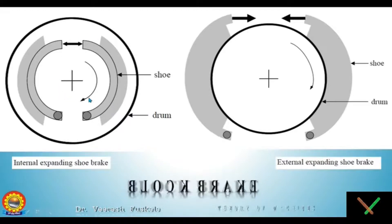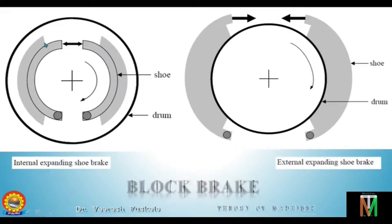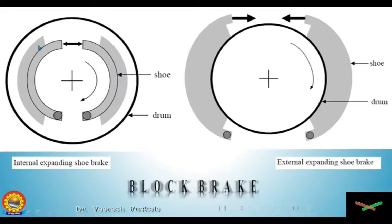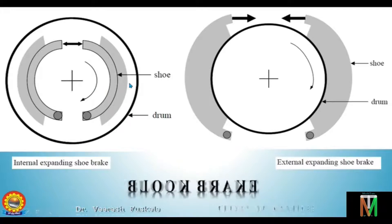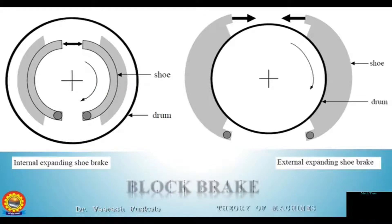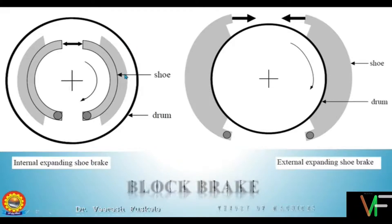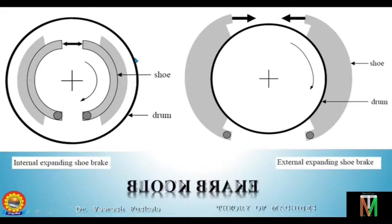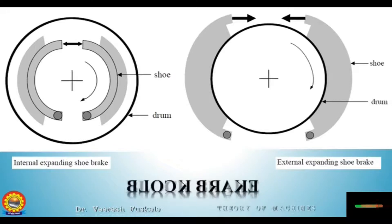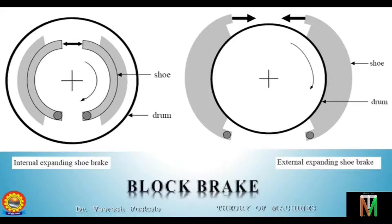It consists of two semicircular shoes which are lined with friction material. The shoe is pressed against the inner flange of the drum. When the brake is applied, under normal running of the vehicle the drum rotates freely, as the outer diameter of the shoe is less than the internal diameter of the drum. The actuating force is applied by two equal diameter pistons in a common hydraulic cylinder and is applied equally in magnitude to each.